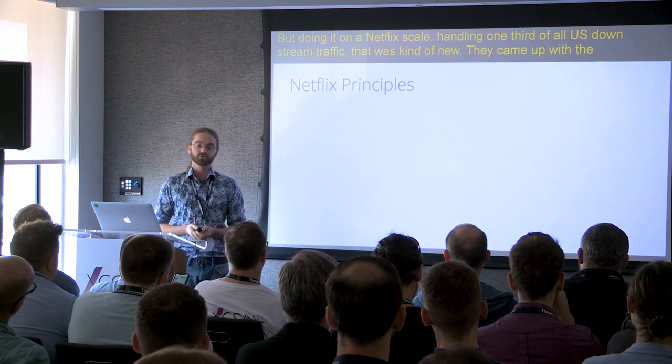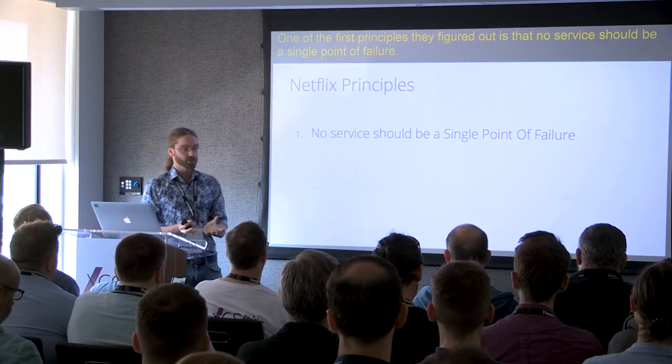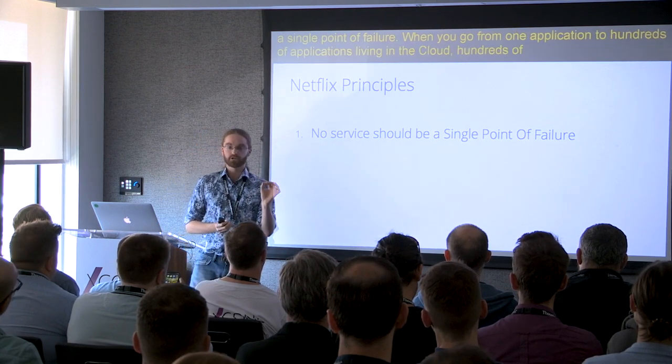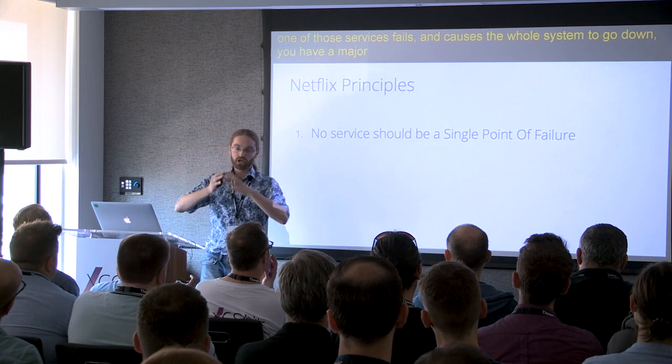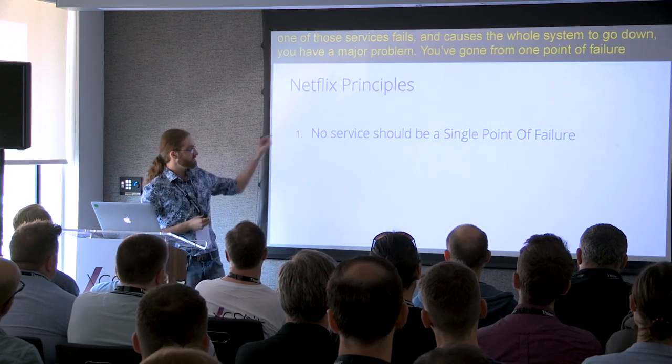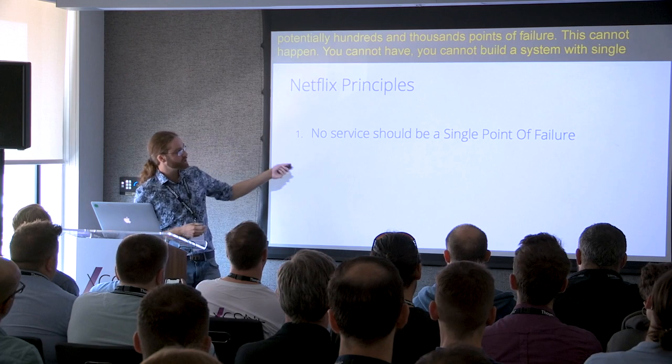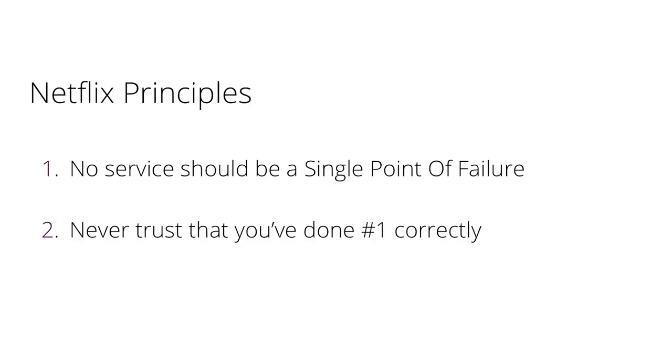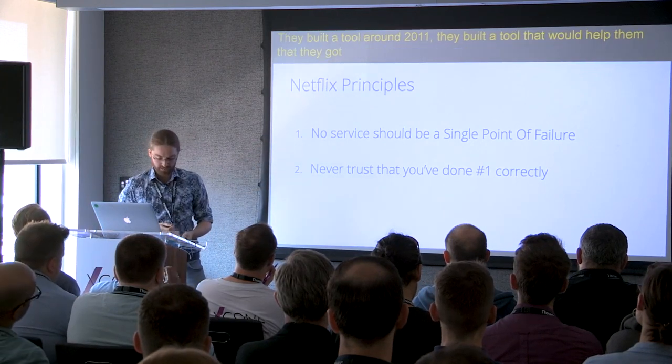So they came up with the Netflix engineering principles—the things they needed to do to get this right. One of the first principles they figured out is that no service should be a single point of failure. When you go from one application to hundreds of applications living in the cloud, if one of those services fails and causes the whole system to go down, you have a major problem. You cannot build a system with single points of failure. This is such an important principle that their second principle is to never trust that they got the first principle right. They built a tool around 2011 that would help them validate this, and that tool is Chaos Monkey.